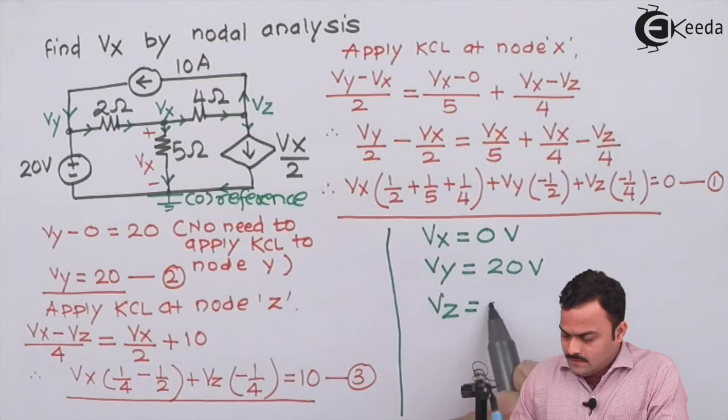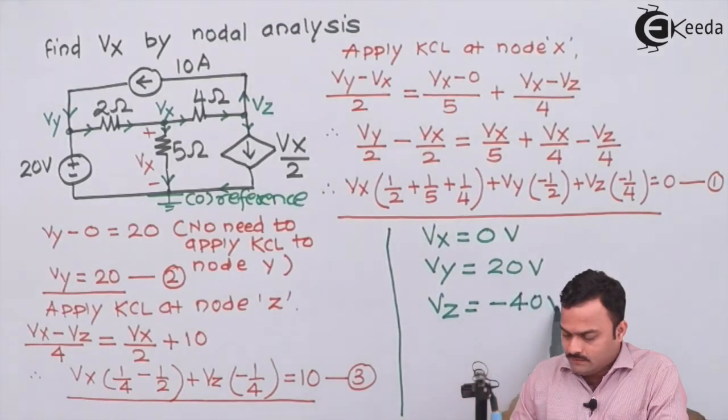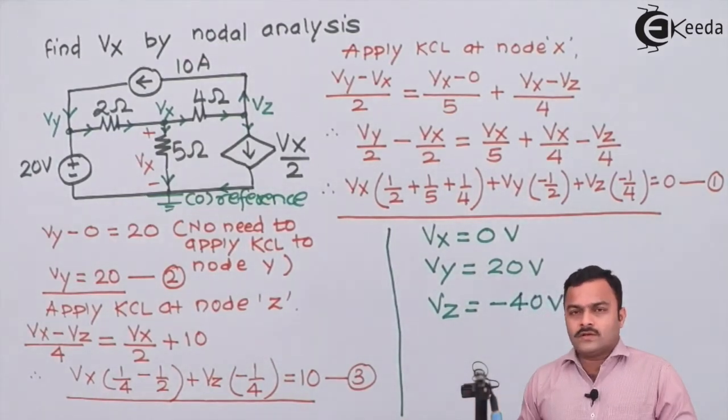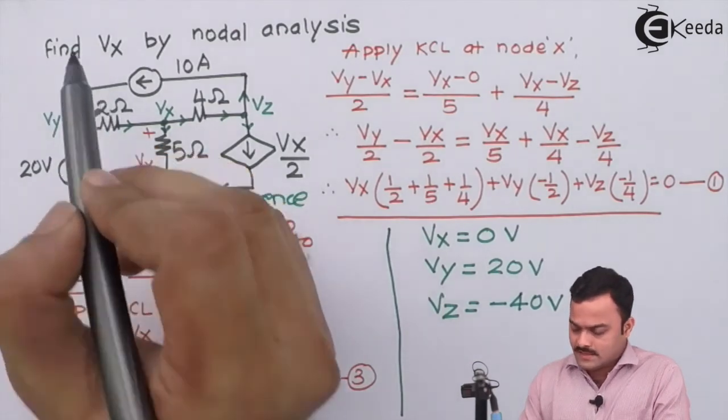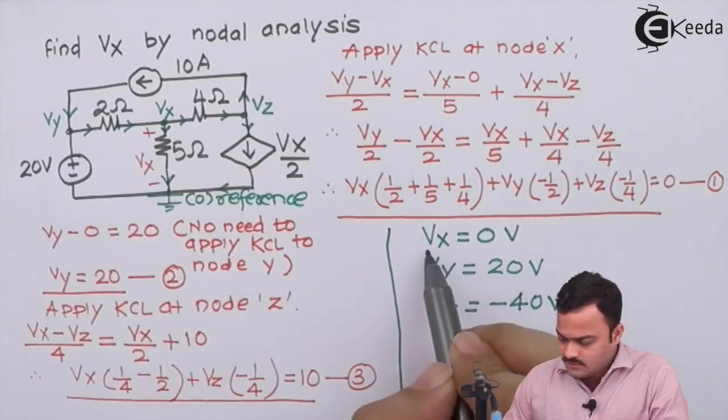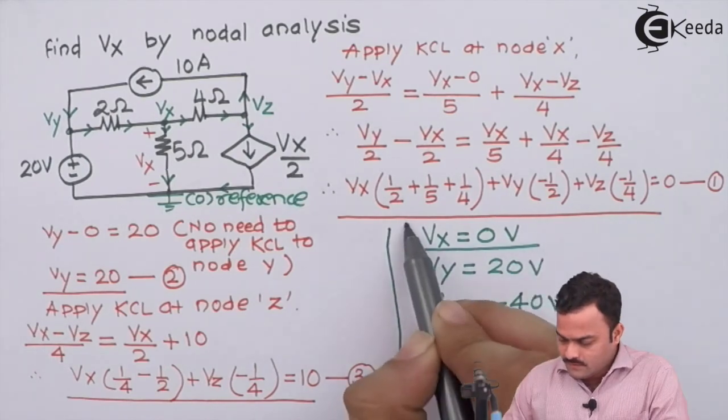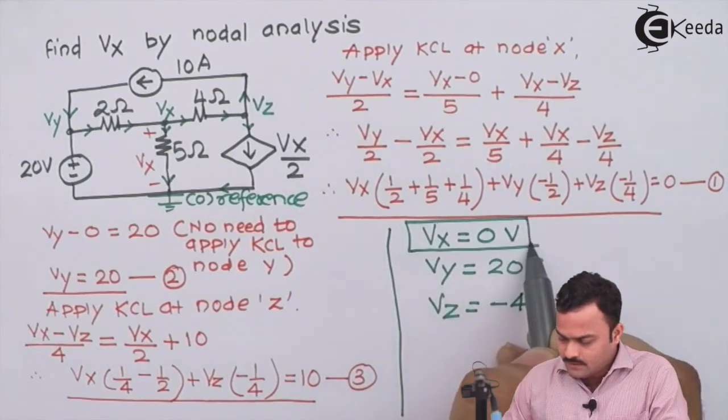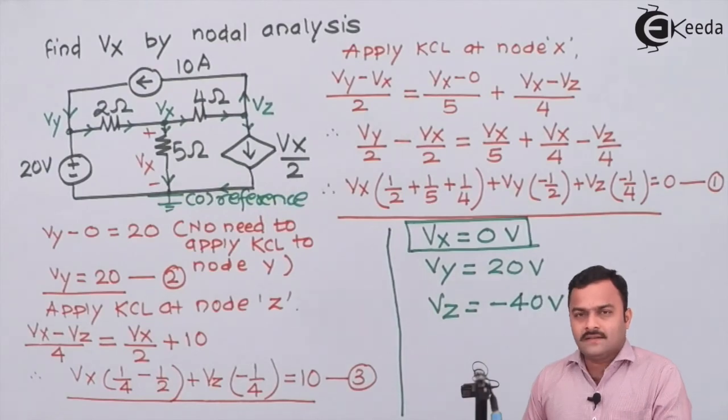After solving, we will get Vx as 0 volt, Vy obviously 20 volt, and Vz we will get as minus 40 volt. The question was to get Vx and we got this Vx over here as 0 volt. So this is our final answer. Thank you.